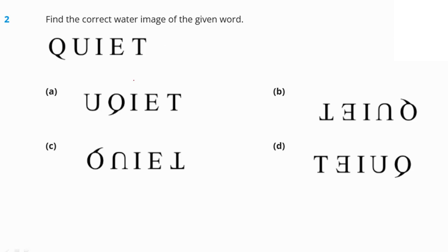So it has to look like T, then E-I, then U and Q. We see this kind of image in option number C. So 2C is our correct answer.